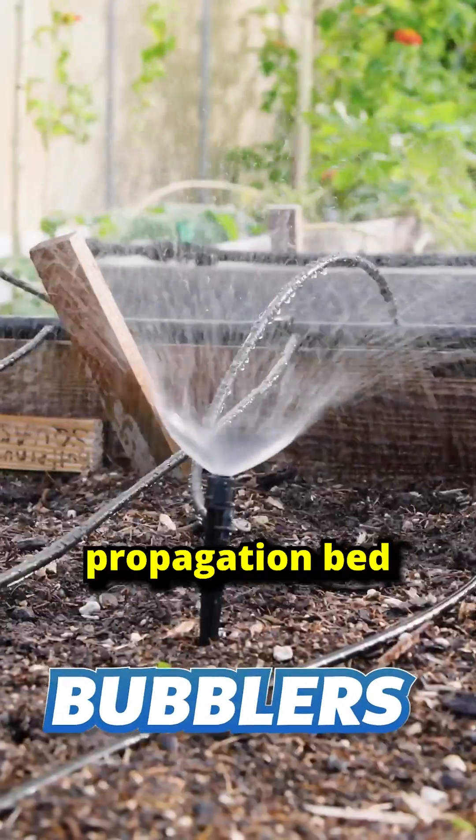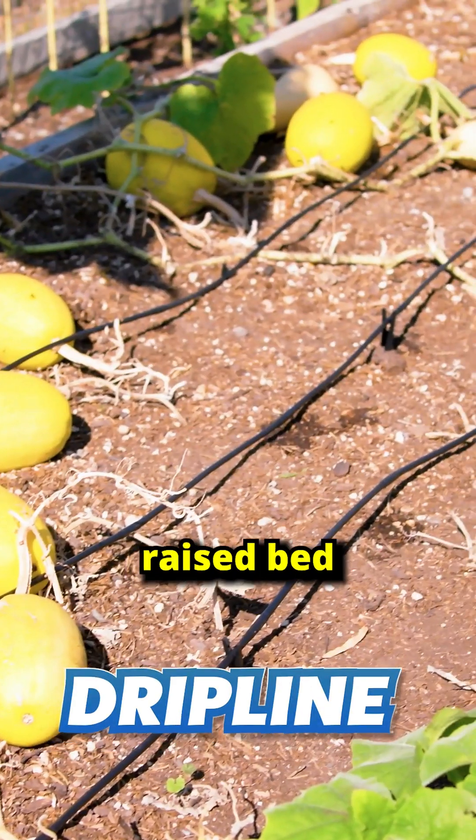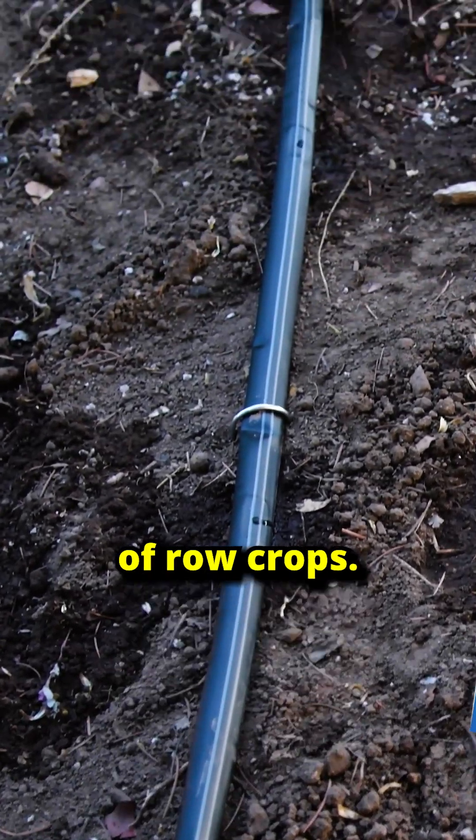Sprayers or bubblers for the propagation bed, individual drippers for potted plants, drip line for your small raised bed, or drip tape for long rows of row crops.